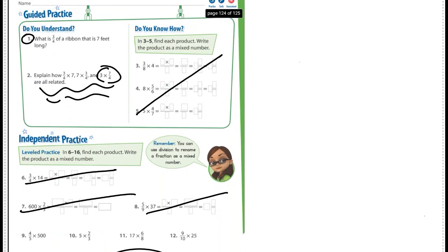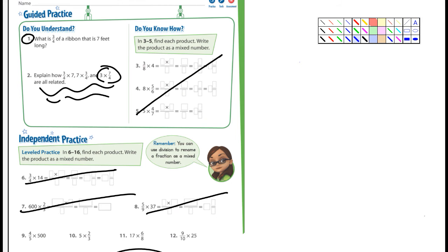So let's just jump into the next page here. I'm looking at the guided practice. Number 1 says, what is 3/4 of a ribbon that is 7 feet long? Well, we just did a problem very similar to that. It's going to be 3/4 times simply 7 over 1.